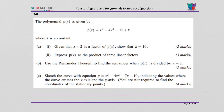Question 34. The polynomial P of x is given by P of x equals x cubed minus 4x squared minus 7x plus k, where k is a constant.